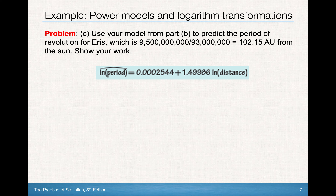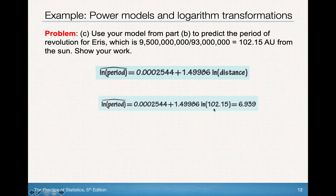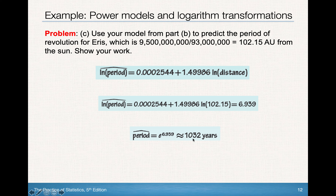We use our model to predict the period of revolution for Aries, the possible new planet, which is 102.15 astronomical units from the sun. Plugging in: ln(period-hat) = 0.0002544 + 1.49986 · ln(102.15) = 6.939. Since this is the natural log of the period, to find the actual period we compute e^6.939 ≈ 1032 Earth years — that's how long it would take Aries to revolve around the sun.